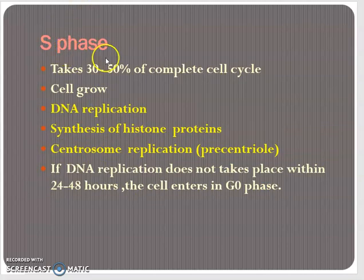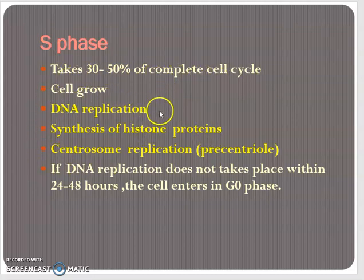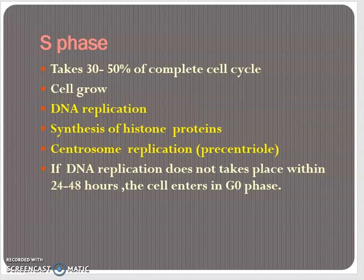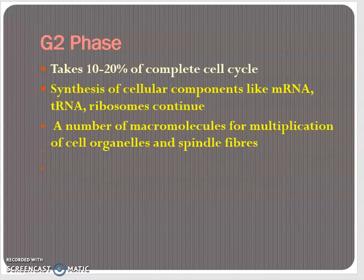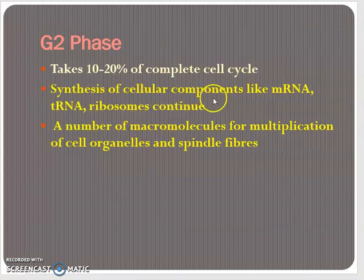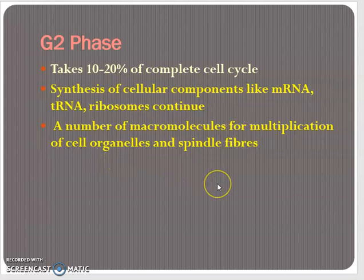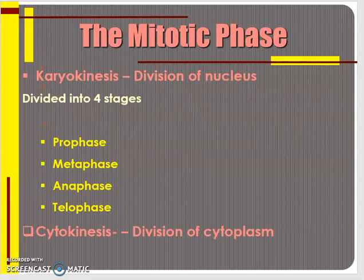After G1 phase, there is S phase which takes about 30 to 50 percent of the complete cell cycle. In this phase, mainly DNA replication takes place, and synthesis of histone protein also occurs. S phase is followed by G2 phase, which takes only 10 to 20 percent of the complete cell cycle. In G2, besides the synthesis of cellular components, some macromolecules required for multiplication of cell organelles and spindle fibers are also synthesized.